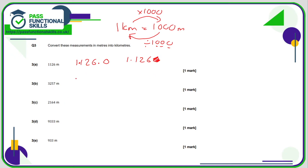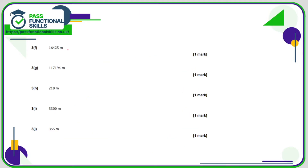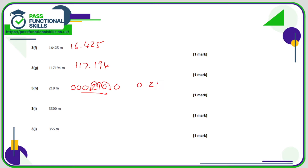Following this pattern: 3.257 kilometers, 2.164 kilometers, 9.333 kilometers. For 933 meters, put some zeros in front to make it easier to move the decimal point — one, two, three — the answer is 0.933 kilometers. We want to create three decimal places: 16.425, 117.194. For 210, put zeros in front and a decimal point and zero, move one, two, three positions — the answer is 0.355 kilometers.